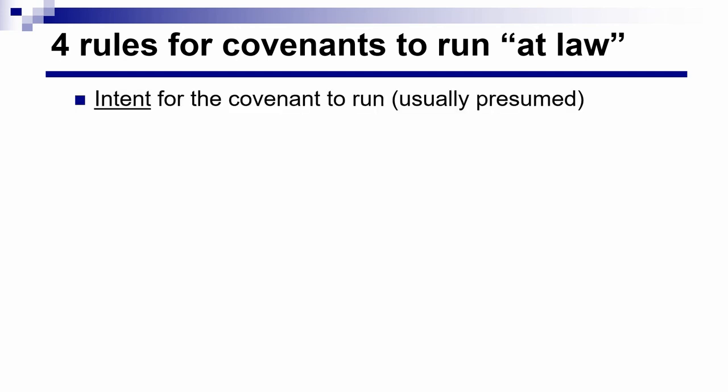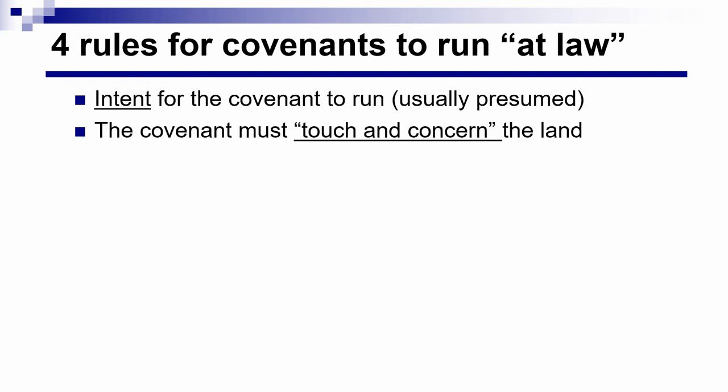The first rule is that there must be intent for the covenant to run with the land. Usually we find an expression of that intent in the wording of the original covenant itself. But even if that wording isn't there, the courts will often presume that the intent is present if the other three rules are satisfied. The second requirement is that the covenant must touch and concern the land — essentially, the covenant has to have something to do with the real estate.